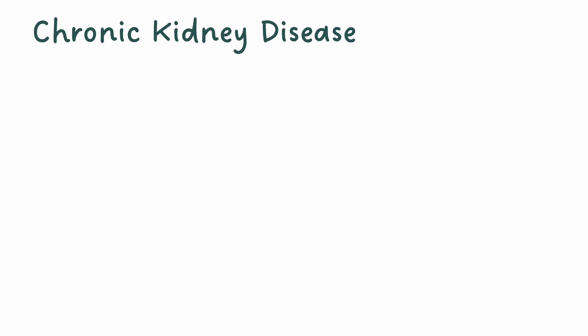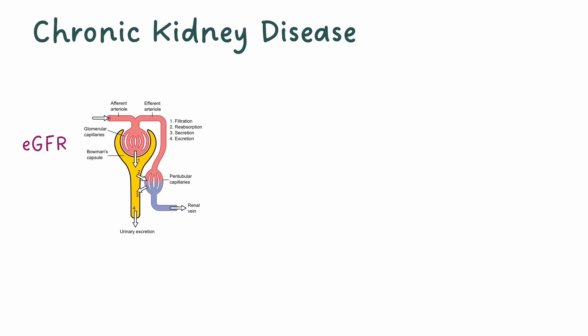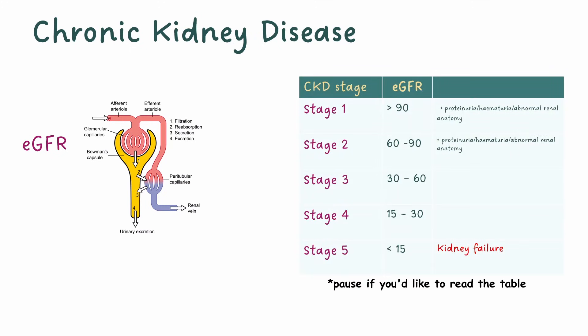Chronic kidney disease is reduced kidney function over a period of three months or more. We can determine the presence of CKD by using eGFR. The lower the eGFR, the less effective the kidneys are at filtering the blood, and therefore the higher the stage of CKD. Stage 5 is the most severe and is referred to as kidney failure. These patients will likely go on to require dialysis.